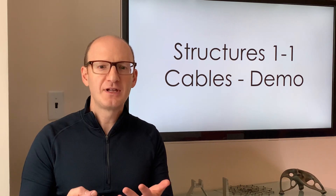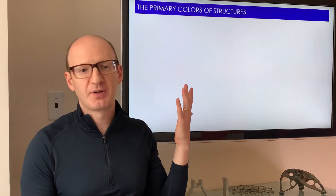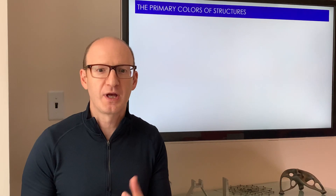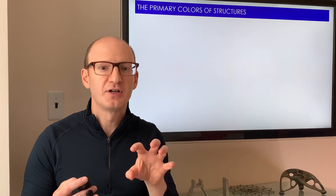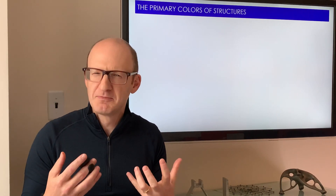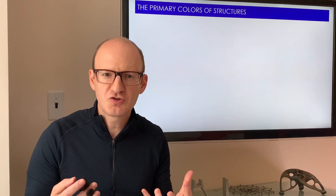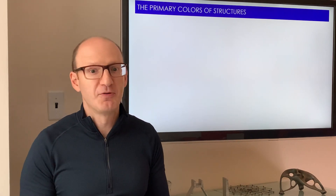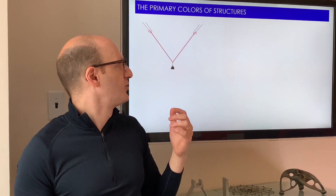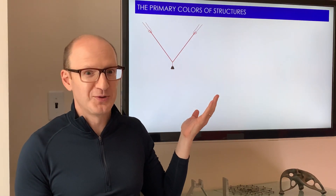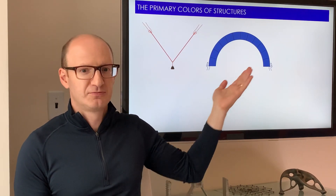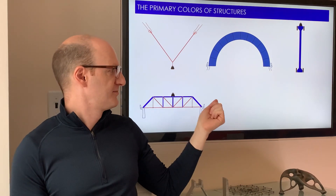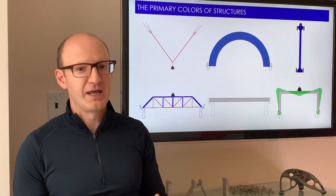If you remember, the list of items were more like the example I gave of primary colours of structures, where you have a certain number of specific primary types of structure, but you can combine them in many different ways. And as a reminder, those were: the cable that we're starting with today, arch, column, truss, beam and frame.